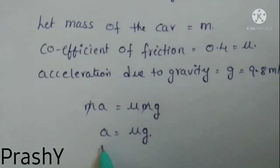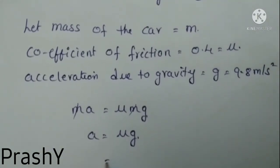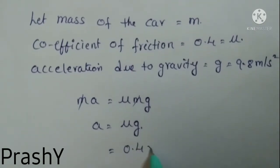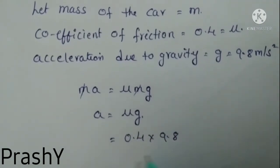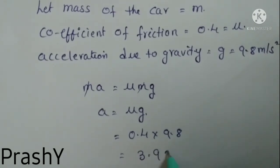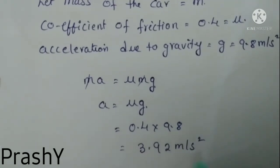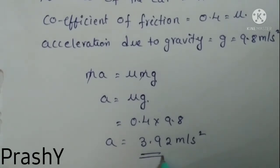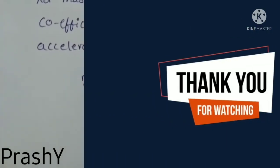We know the values: μ is 0.4 and g is 9.8. Finally we get 3.92 meters per second squared. So this is the acceleration required. Thank you.